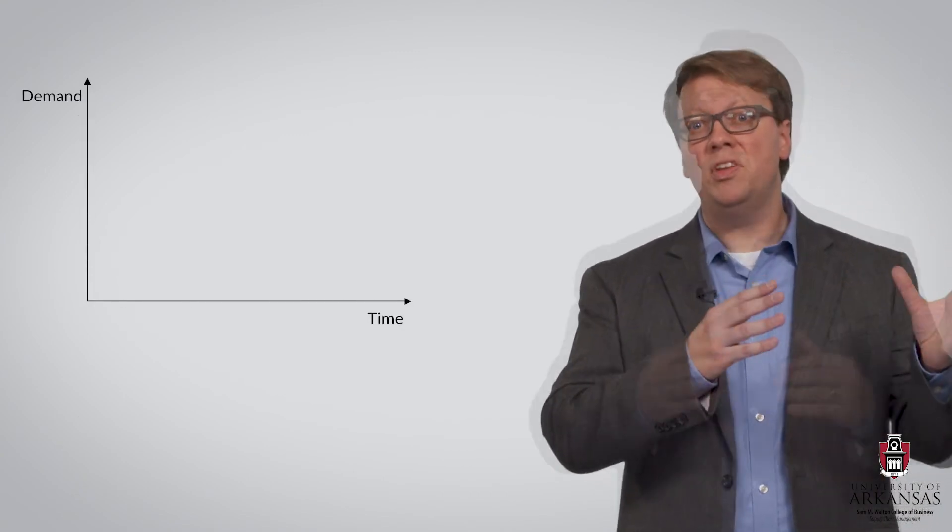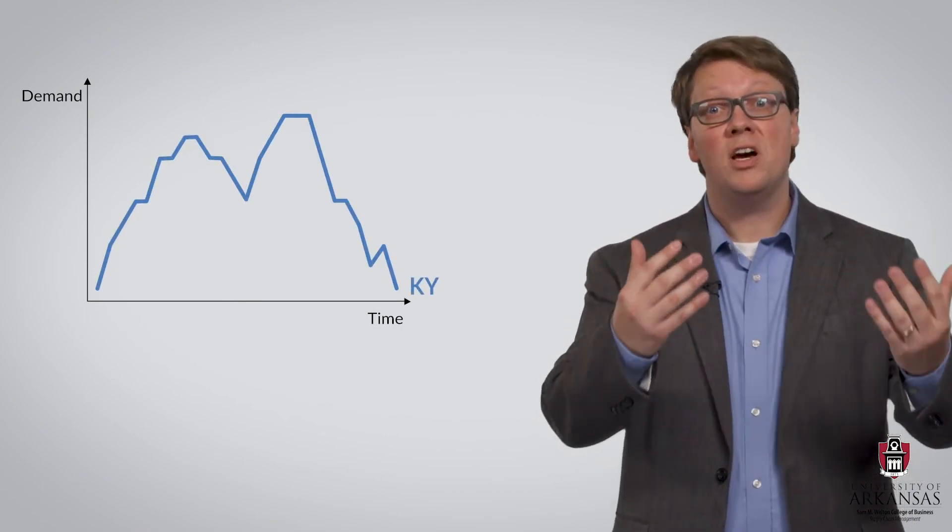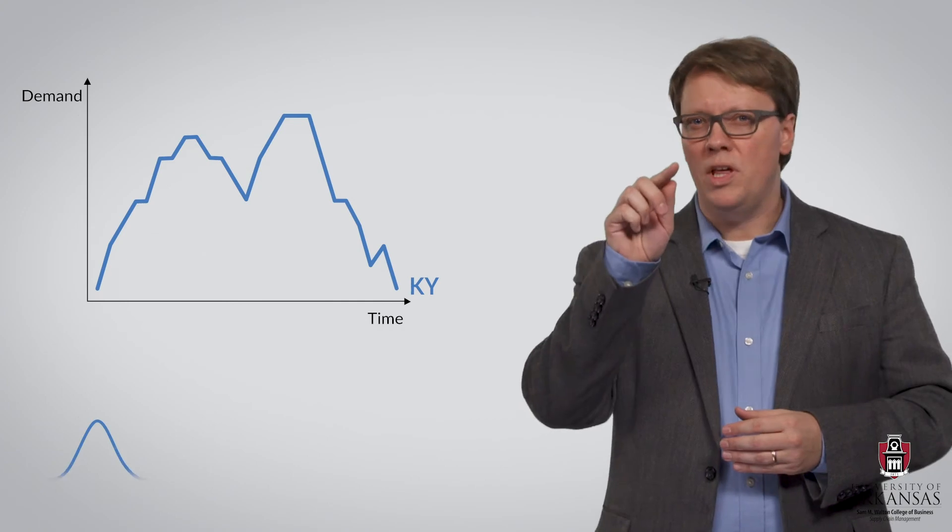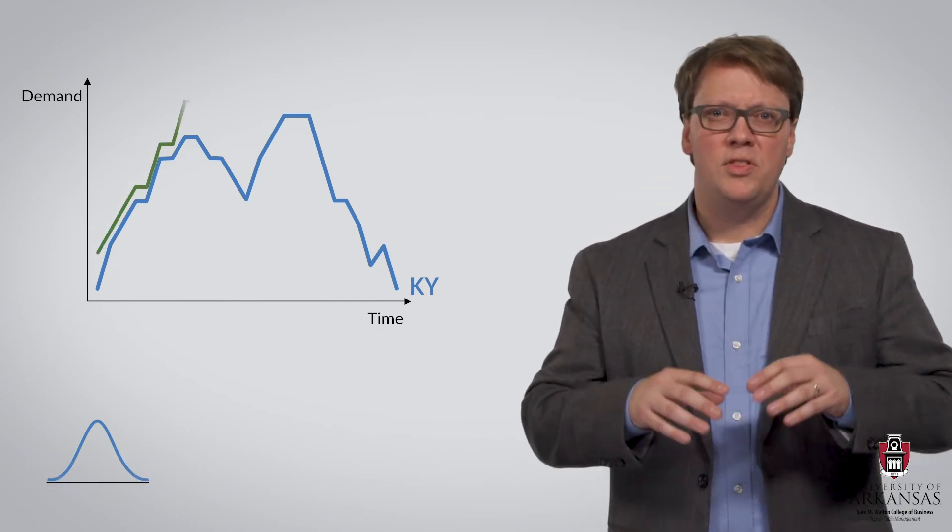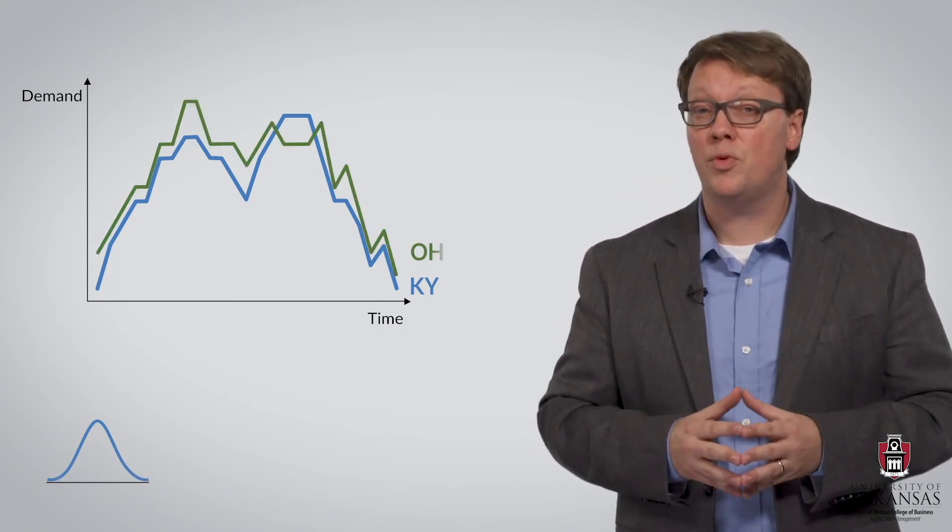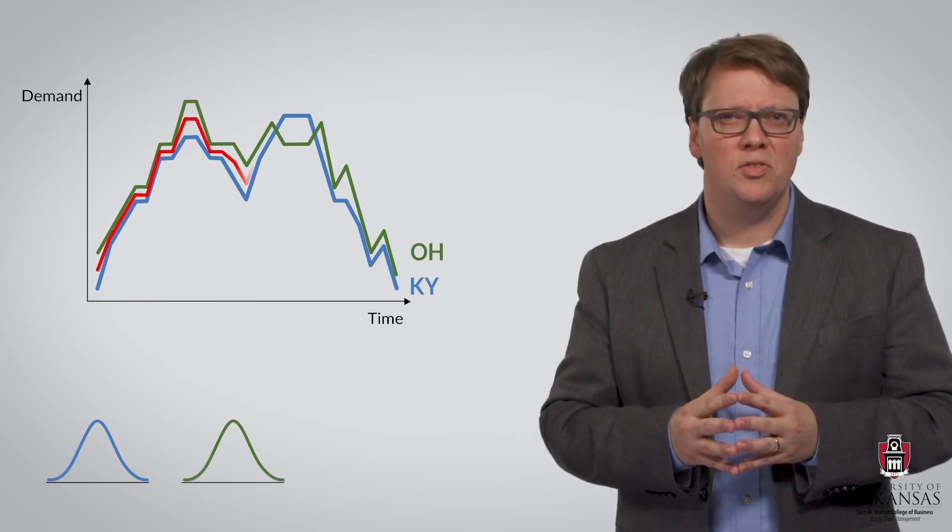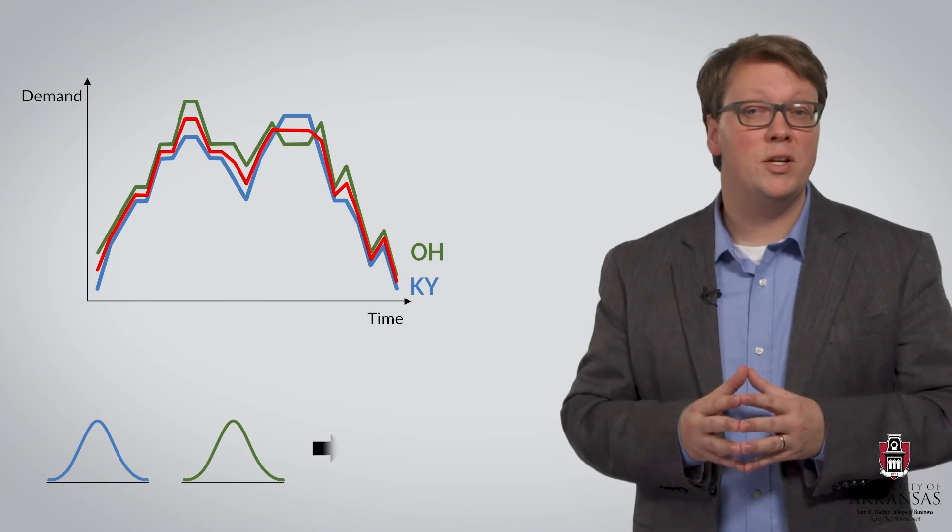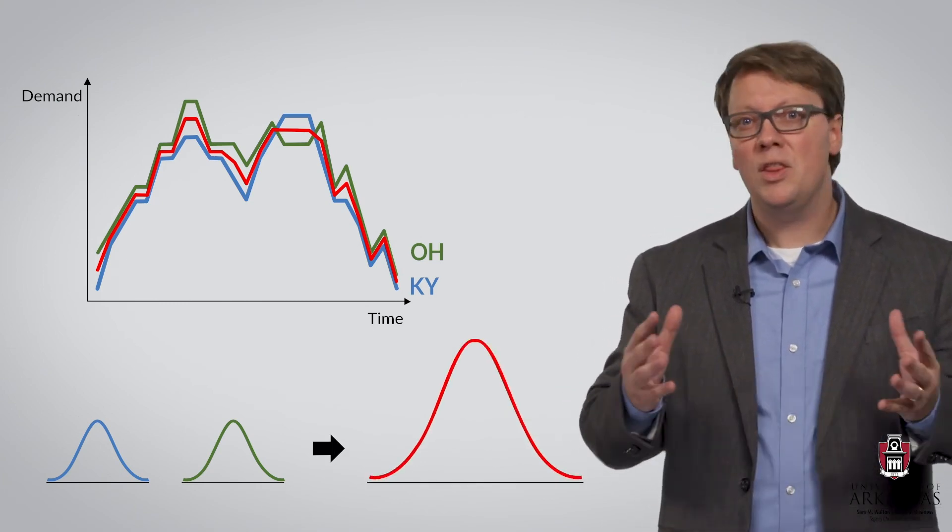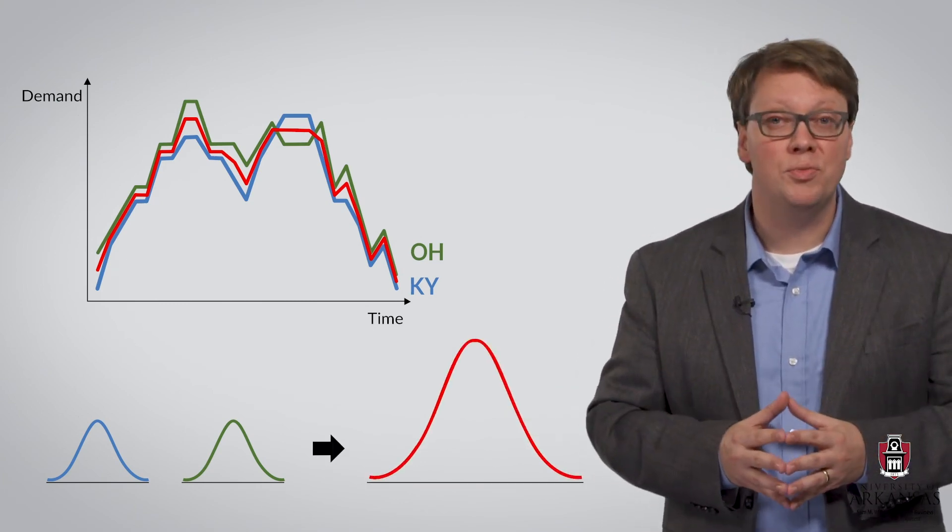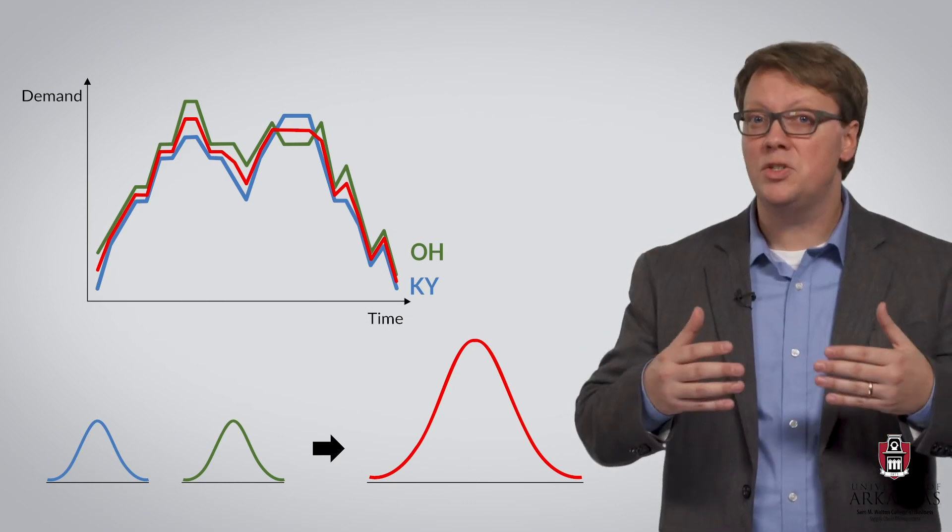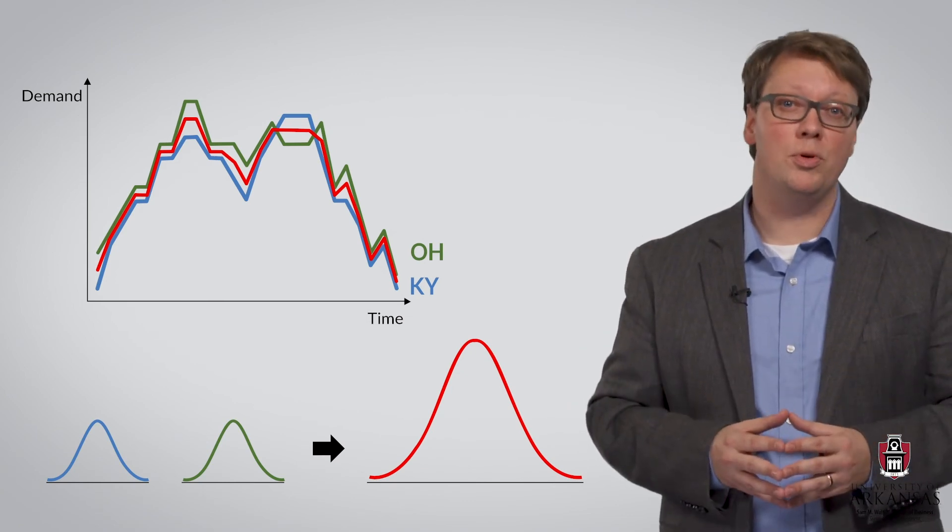Now let's look at what happens when there is a positive correlation. Again, we see the demand pattern and associated variability for the Kentucky market. With a positive correlation, the pattern will be very similar for Ohio. So if we pool the two locations, we do not observe the smoothing effect we saw earlier. In other words, we are not able to reduce risk, and there is little to no benefit to risk pooling.